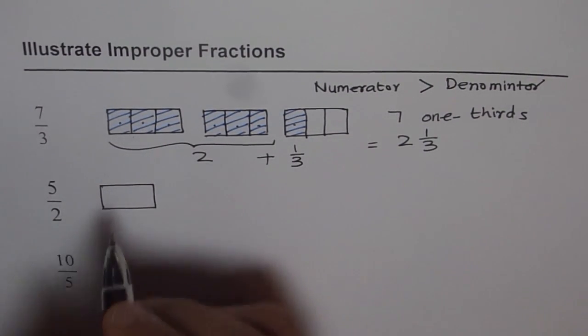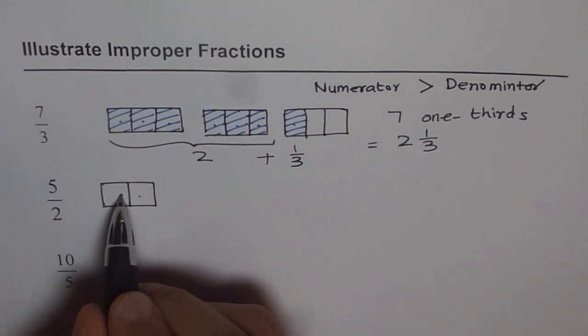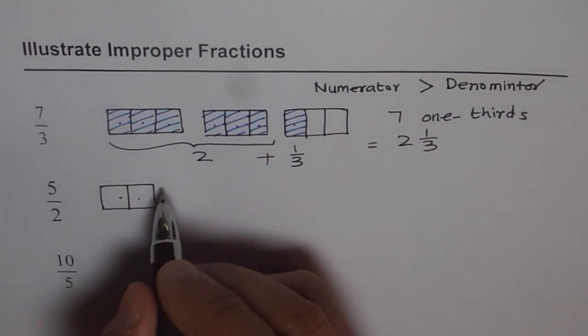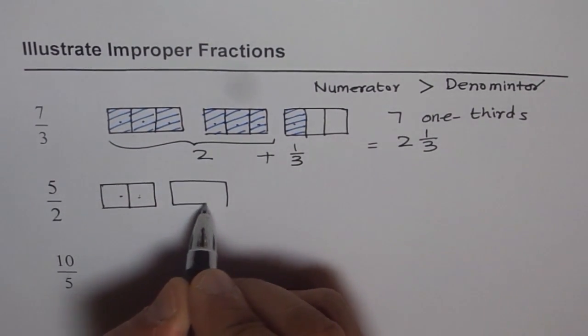Denominator is 2, so it should be 2 parts. Now, 2 parts just give me 1 half, 2 halves. I need how many halves? 5. So for 5 halves, how many rectangles do I need?